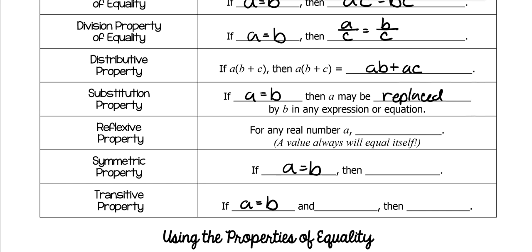The reflexive property is if you get the exact same thing back — it's kind of like a reflection. This isn't really something we do a lot in algebra properties; it's something we do more when we do geometry proofs. It's just saying x equals x — that's the reflexive property. If five equals five, that's the reflexive property. As long as the left side of the equals is the exact same as the right side of the equals, it's the reflexive property.